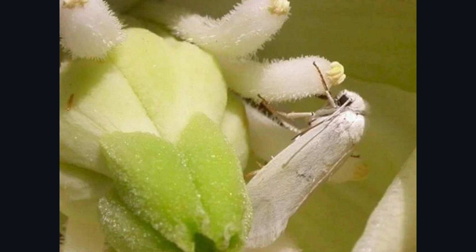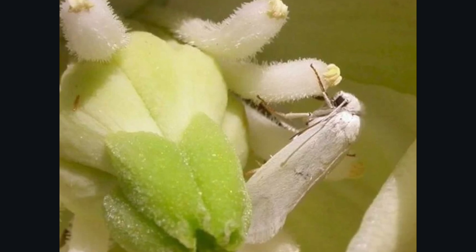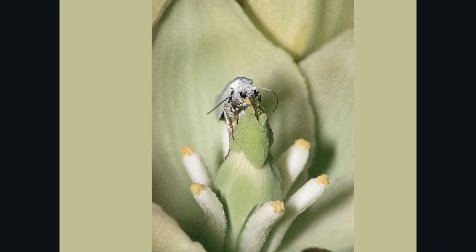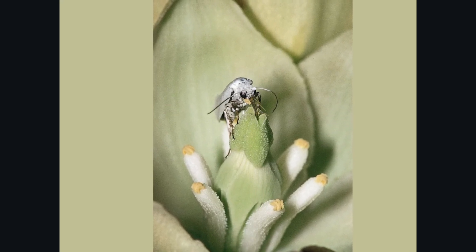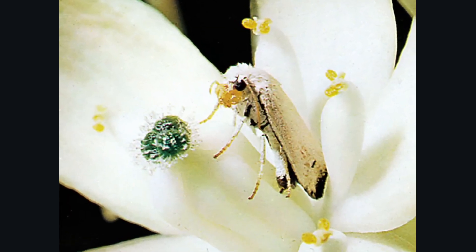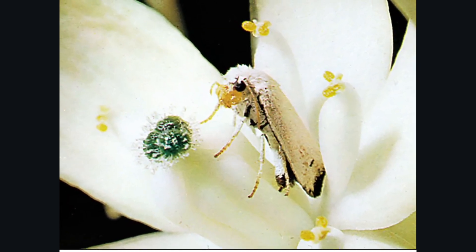When a female is ready to lay eggs, she first goes to a yucca flower to collect pollen. Unlike most moth species, yucca moths have two short tentacles near their mouth that they use to scrape pollen from the anthers of the flower. As she collects the sticky pollen, the yucca moth packs it into a ball and sticks it under her head.